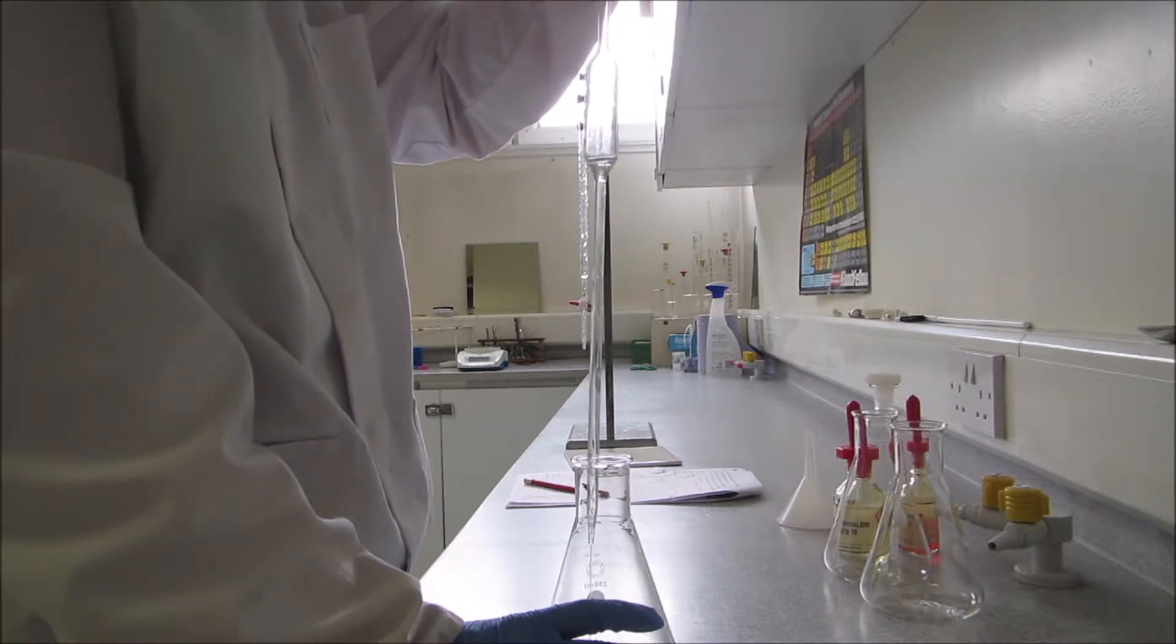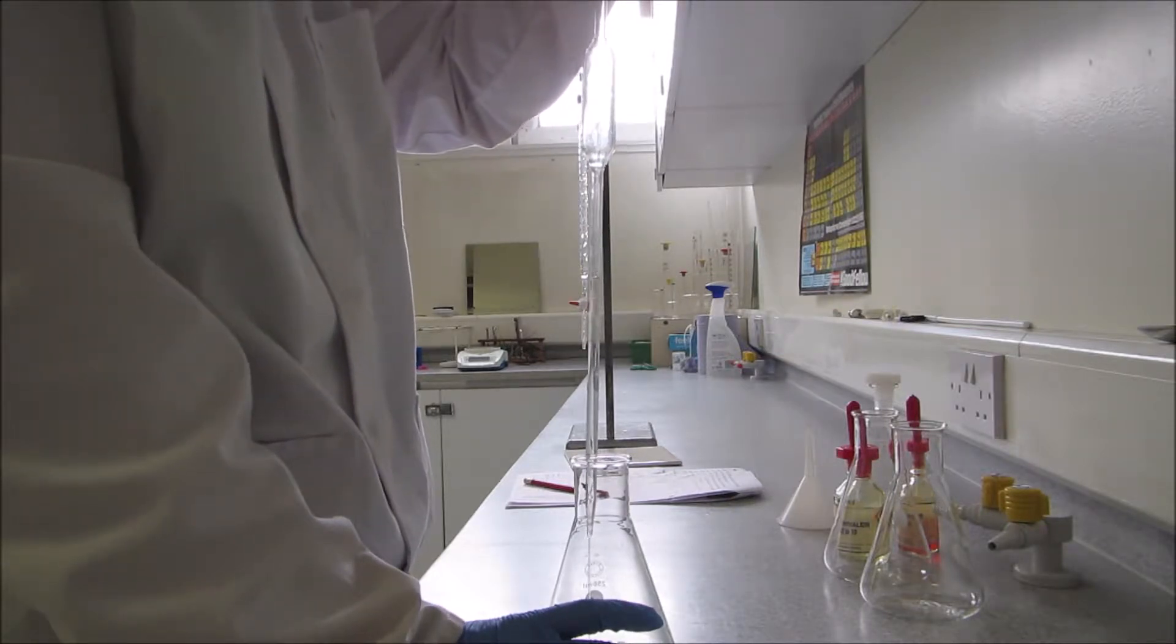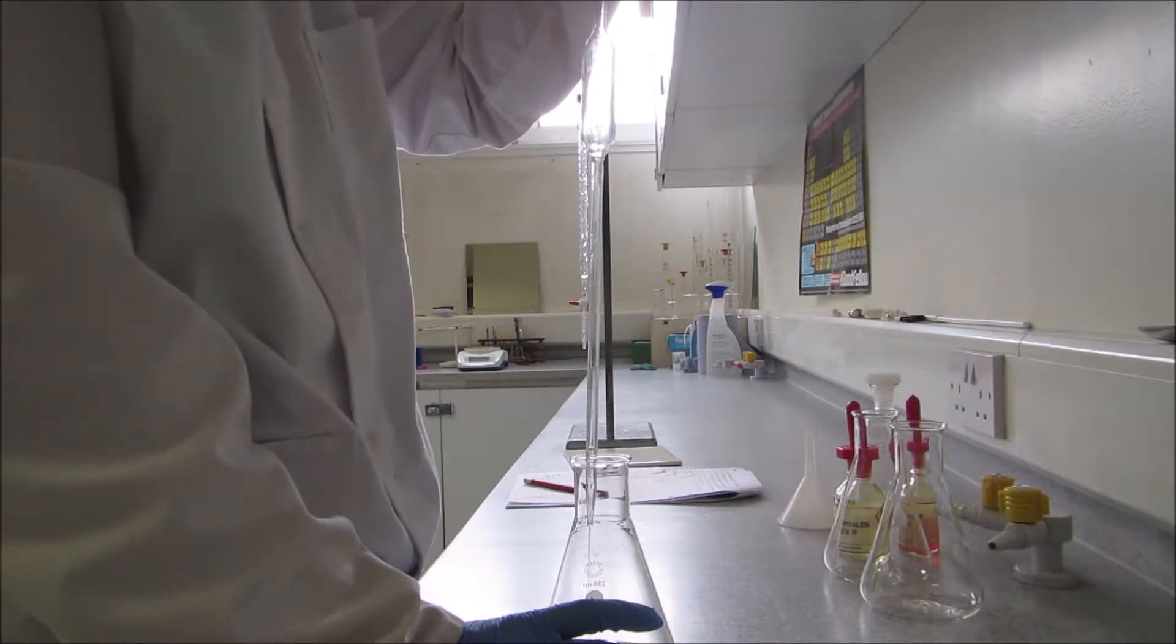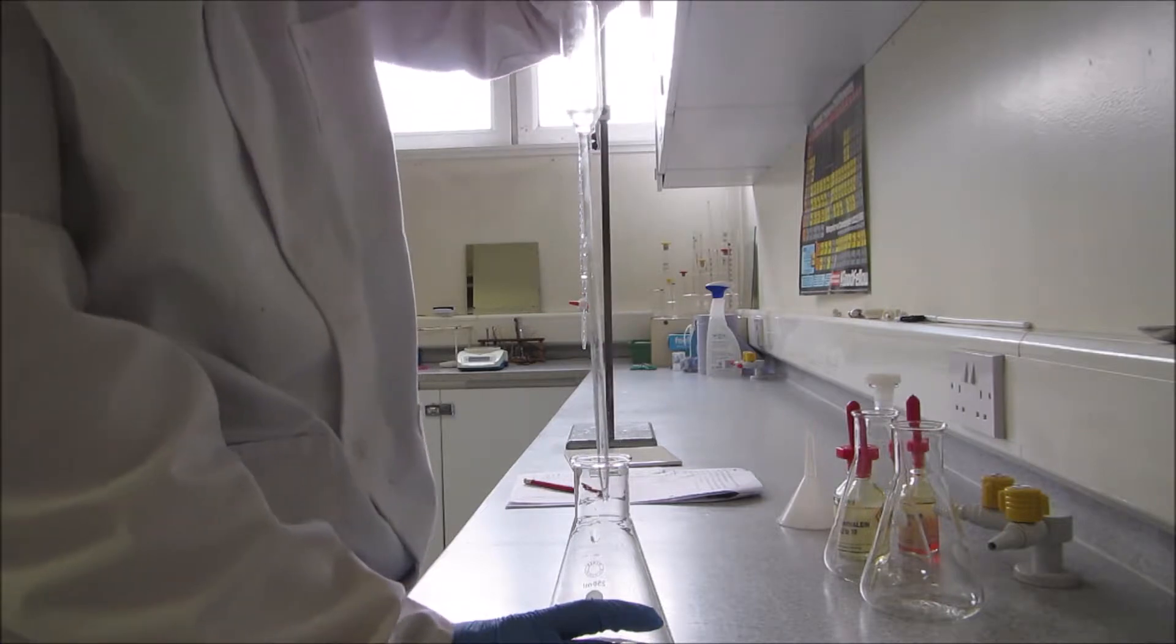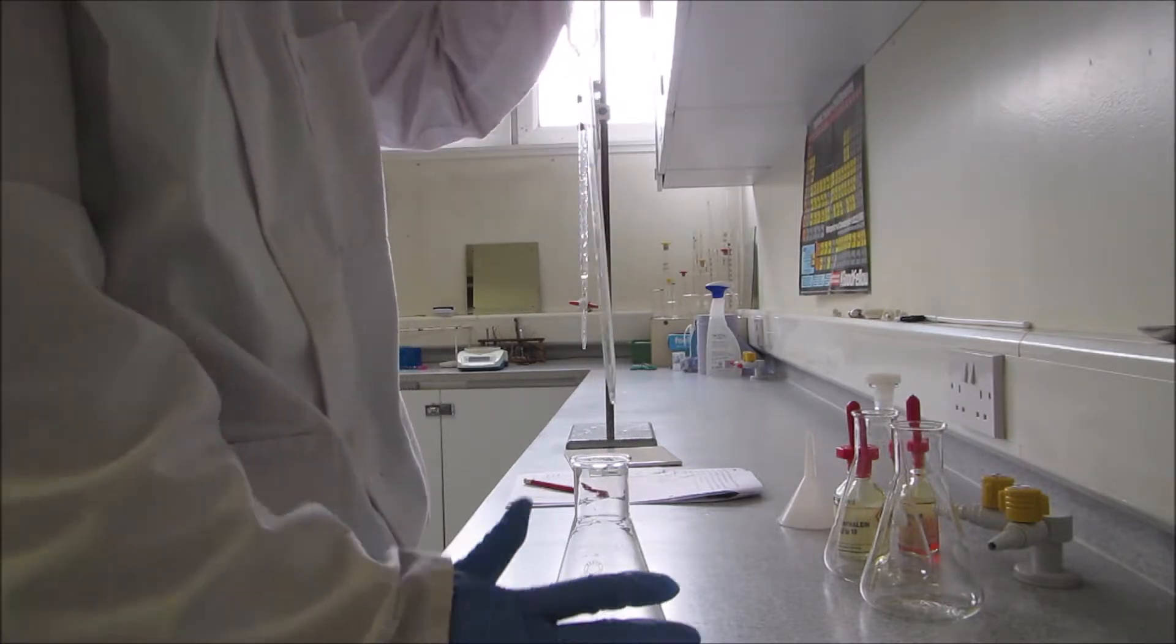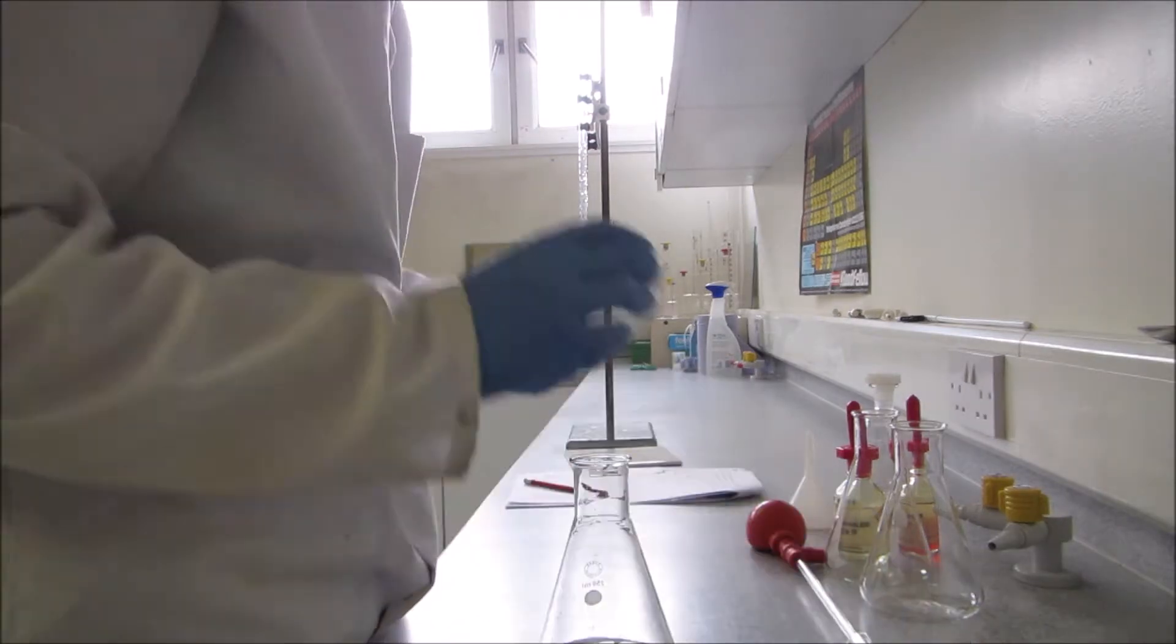So the next part is going to be to use an indicator that detects alkaline solutions. I'll just touch the last drop to the side of the flask and set that down.